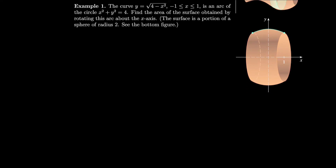The curve y equals the square root of 4 minus x squared, where x is between −1 and 1, is an arc of the circle x² + y² = 4. You could just take x² + y² = 4 and solve for y — you get plus or minus — but we're only considering the top part. That's this green part right over here. We take that top part and find the area of the surface obtained by rotating this arc about the x-axis.